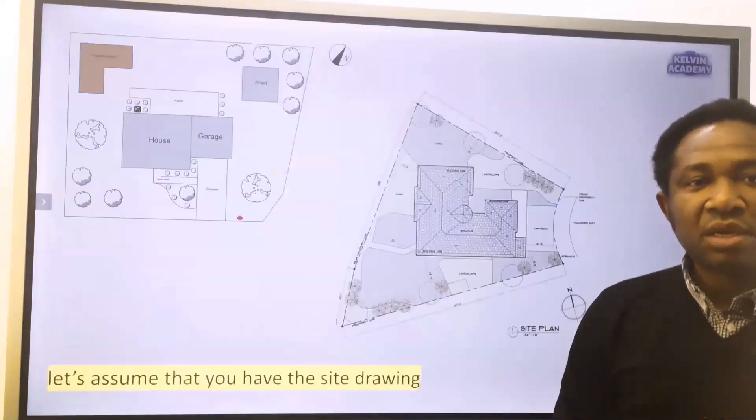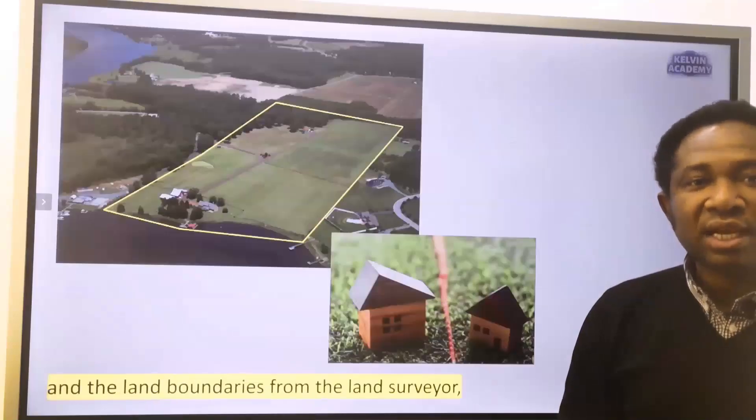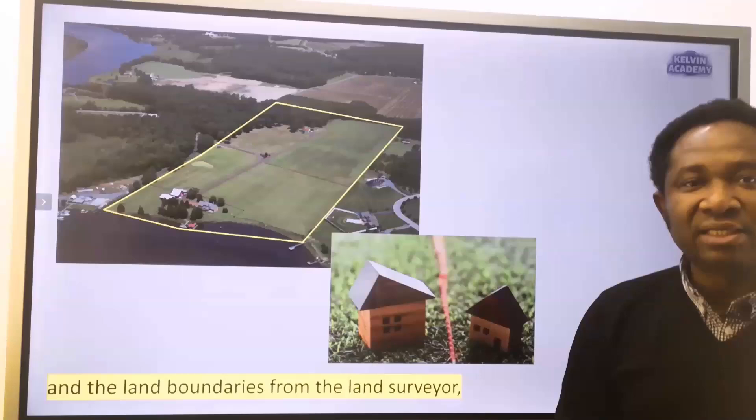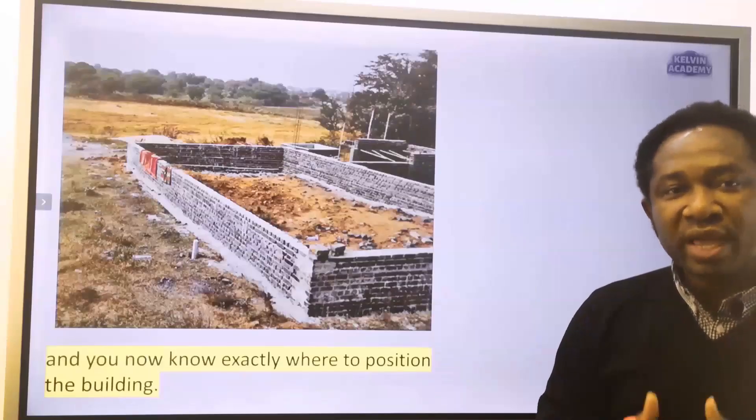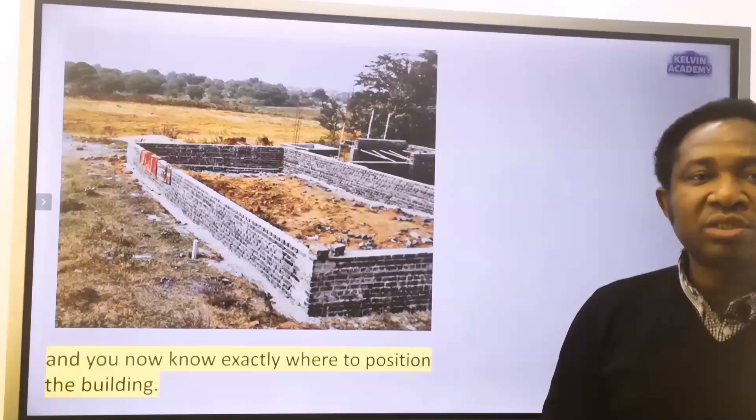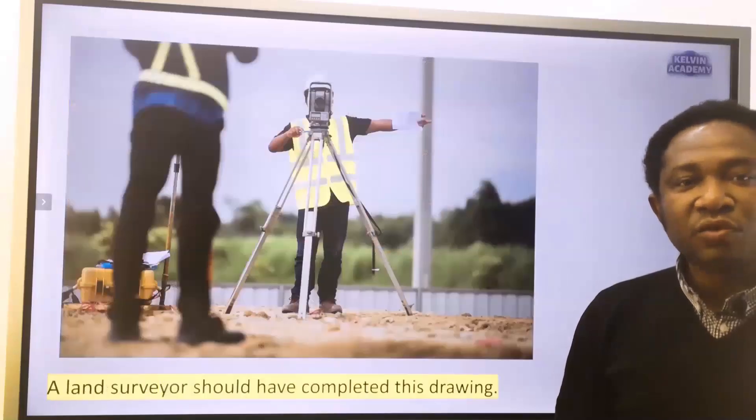To keep it simple, let's assume that you have the site drawing and the land boundaries from the land surveyor, and you'll now know exactly where to position the building. A land surveyor should have completed this drawing.